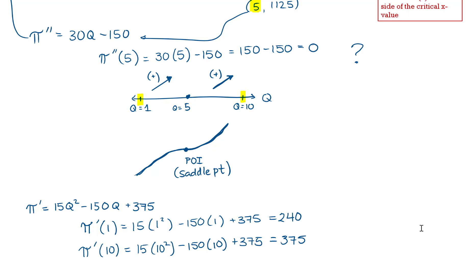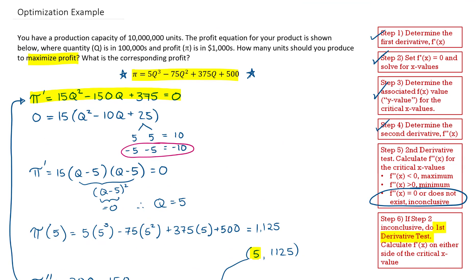So what this means is that profit is just going up and up — as long as I sell more, I'm going to be more profitable. There's no maximum profit per se, except we do have one limitation: our production capacity. We won't be able to sell more than we can produce. Maximum profit in this case is dictated by our production capacity, not by the shape of the curve. I'm going to determine the maximum profit using 10 million units.